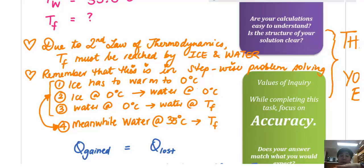The second step is to realize that as it's at ice at zero degrees, it needs to actually warm up or go through latent heat of fusion to turn from ice that's at zero degrees to water at zero degrees. And then the third step is that the water now at zero degrees will now rise in temperature until it gets to the final temperature Tf.